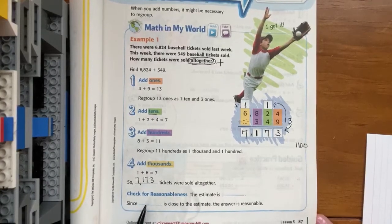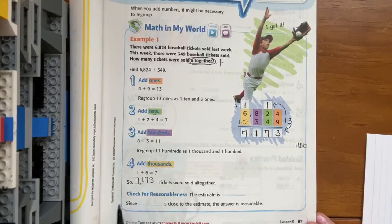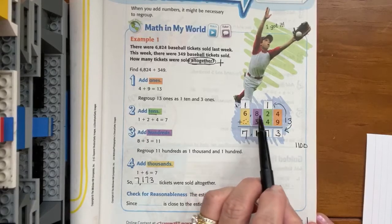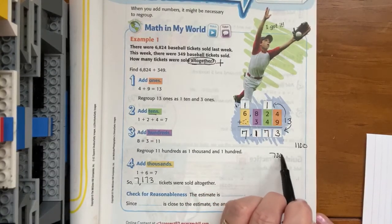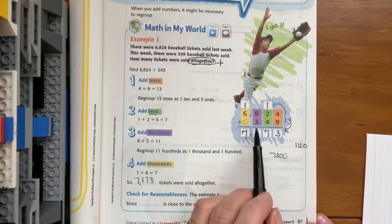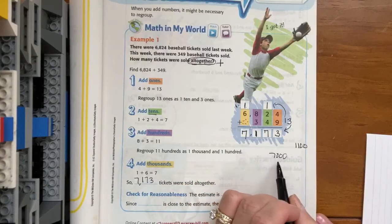And now they want us to check to see if it's reasonable. Okay, so let's estimate. 6,800 is close to 7,000 and 349 rounds to 300.